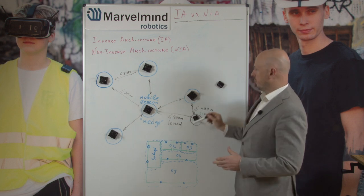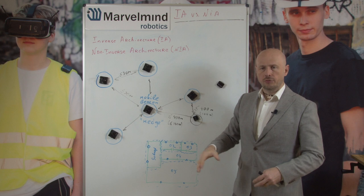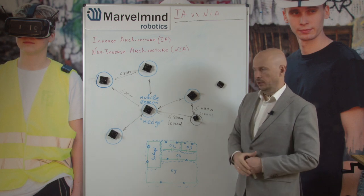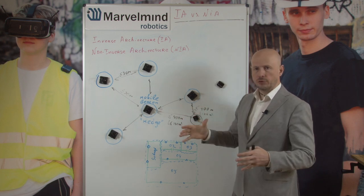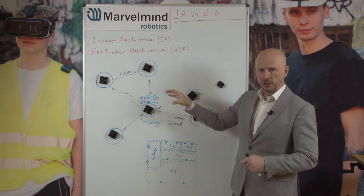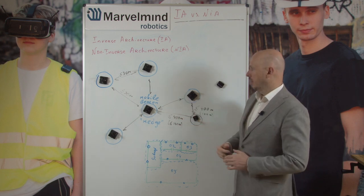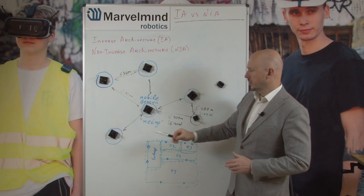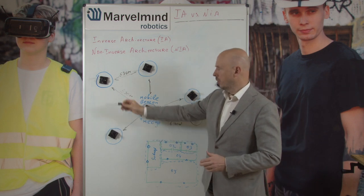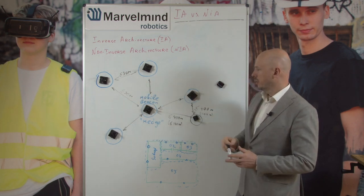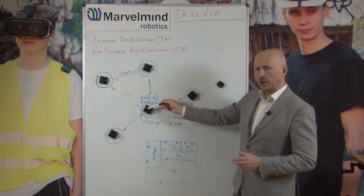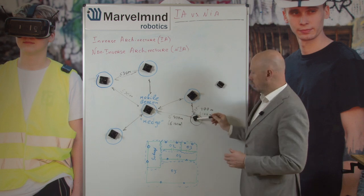This is a very typical configuration for our starter set, which is the smallest configuration for 3D tracking. The configuration consists of four stationary beacons, one mobile beacon, and one modem.